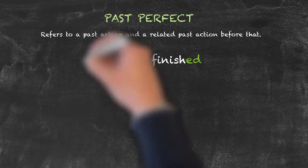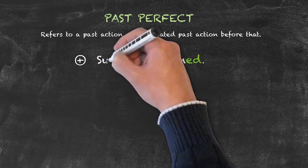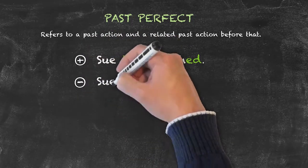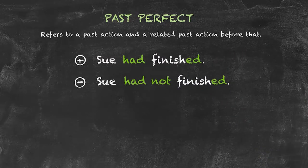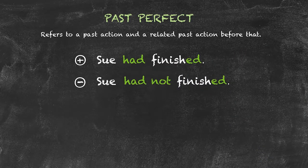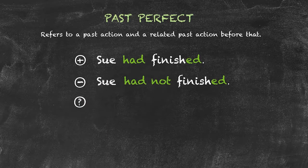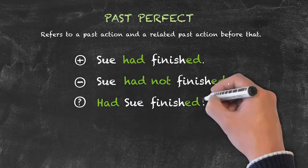The results are sentences like, Sue had finished. Negative: Sue had not finished. We can contract had not into hadn't, and we can ask the question by saying, Had Sue finished?